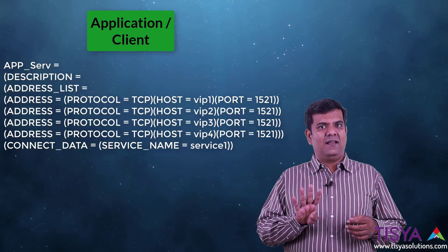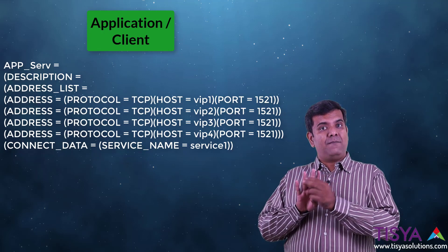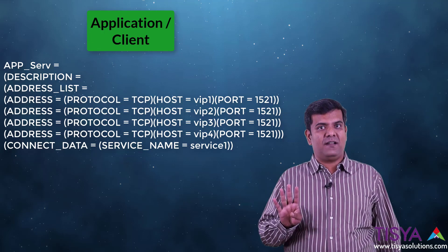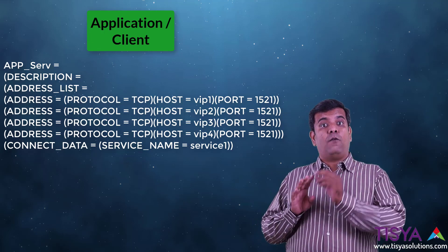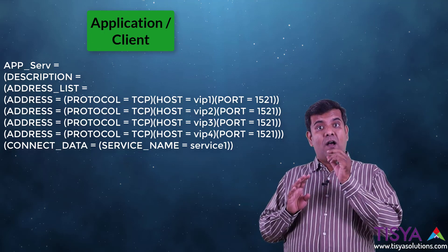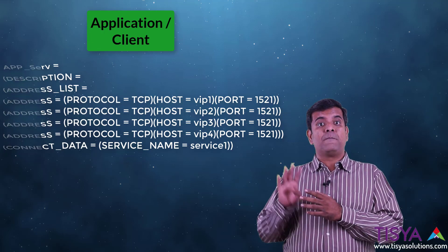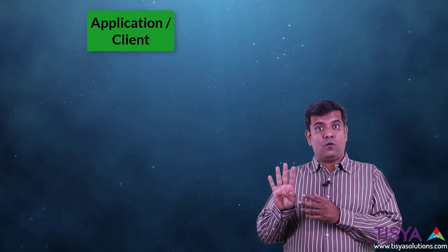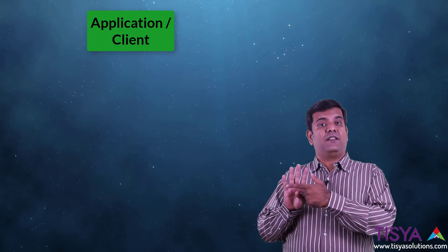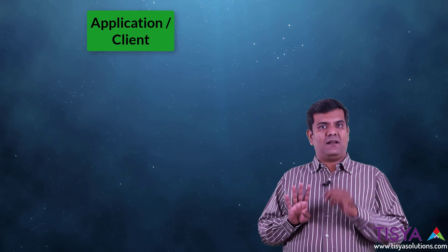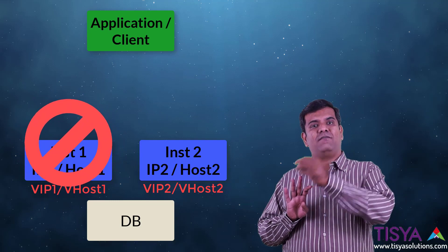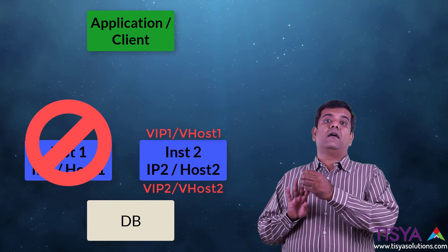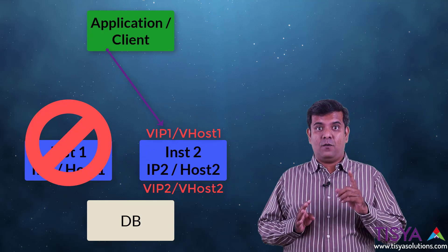Let's say you have a four-node cluster. You would have four host names and four IP addresses managed by the operating system. But apart from that, when you create the cluster, you will also define four VIPs and four VIP host names associated with all four nodes. The host name and IP address are managed by the operating system, whereas the VIP and VIP name are managed by the cluster software.